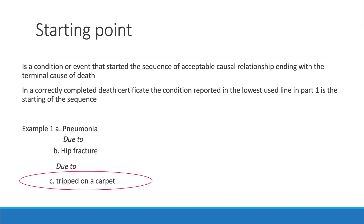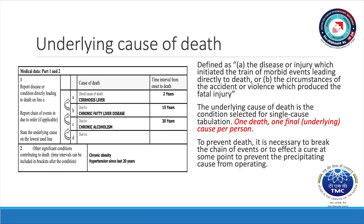The starting point is the condition or event that started the sequence of acceptable causal relationship ending with the terminal cause of death. Underlying cause of death is defined as: (a) the disease or injury which initiated the chain of morbid events leading directly to death, or (b) the circumstances of the accident or violence which produced the fatal injury. The underlying cause of death should be entered on the lowest used line in Part 1, and is the condition selected for single-cause tabulation — one death, one final underlying cause per person. Underlying cause is used in statistical tabulation and analysis of mortality data.